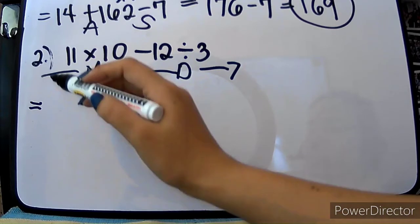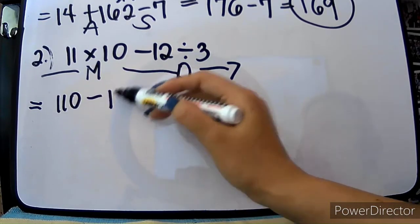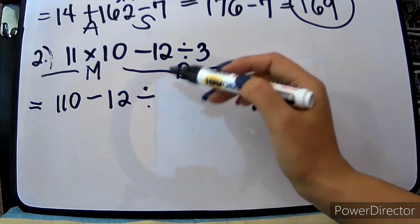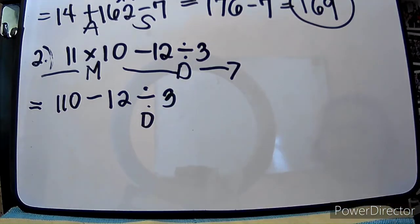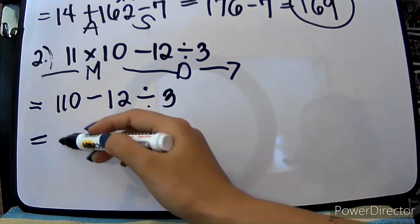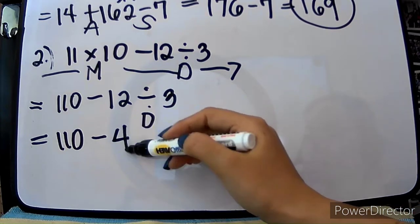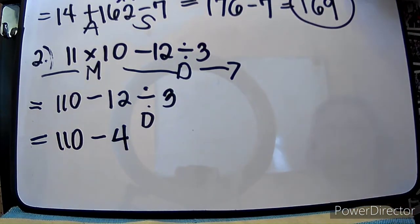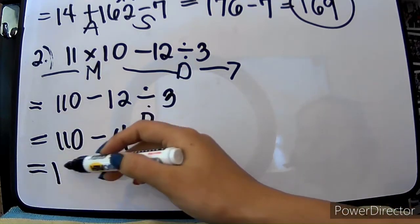So, 11 times 10 is 110. And then, let's copy yung minus 12 divided by 3. This is our division — wala na tayong multiplication, but still we are on this step. So, division naman yung gagawin natin. We will have 110 minus 12 divided by 3, which will give us 4. And isang operation na lang — wala naman tayong addition, so we could directly do the subtraction. So, 110 minus 4 will give us 106.